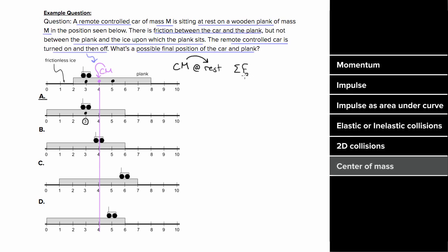There were no external forces on our system and the center of mass started at rest, so it's gotta remain at rest. For option B, the center of the car is at four. The center of the plank is at three. This would put the center of mass somewhere between three and four. But again, that can't be right. We need our center of mass to be at the location four.